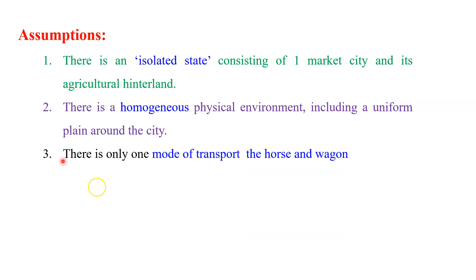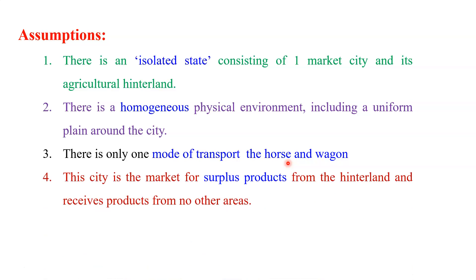The third assumption: there is only one mode of transportation, which is the horse and wagon. The next assumption: the city is the market for surplus products from the hinterland and receives products from no other area. Whatever agriculture commodities or crops are produced must come from inside that isolated state — there should be no outside source or outside commodity brought into that area.